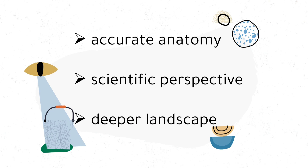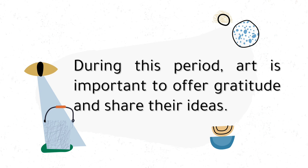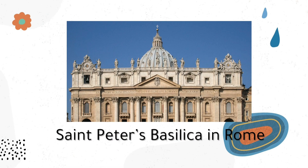In their sculpture, it depicts natural portraits of human beings, while their architecture is characterized by symmetry and balance. Symmetry means their architecture is made up of exactly similar parts, while balance refers to how line, shape, color, value, space, form, and texture relate to each other. During this period, art was important to offer gratitude and share ideas. St. Peter's Basilica in Rome is the greatest cathedral building during this period.